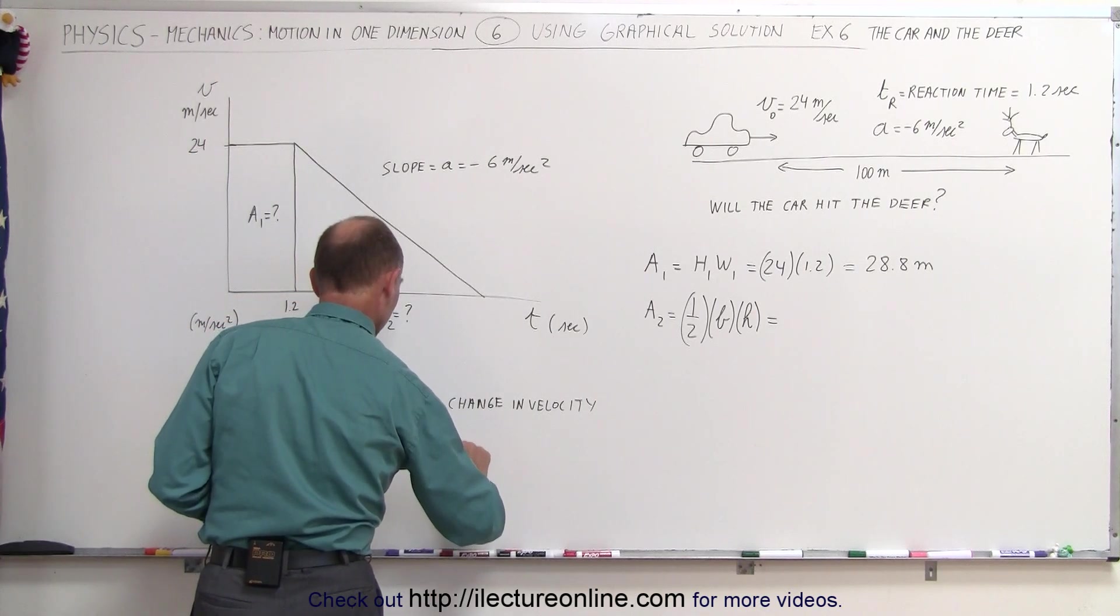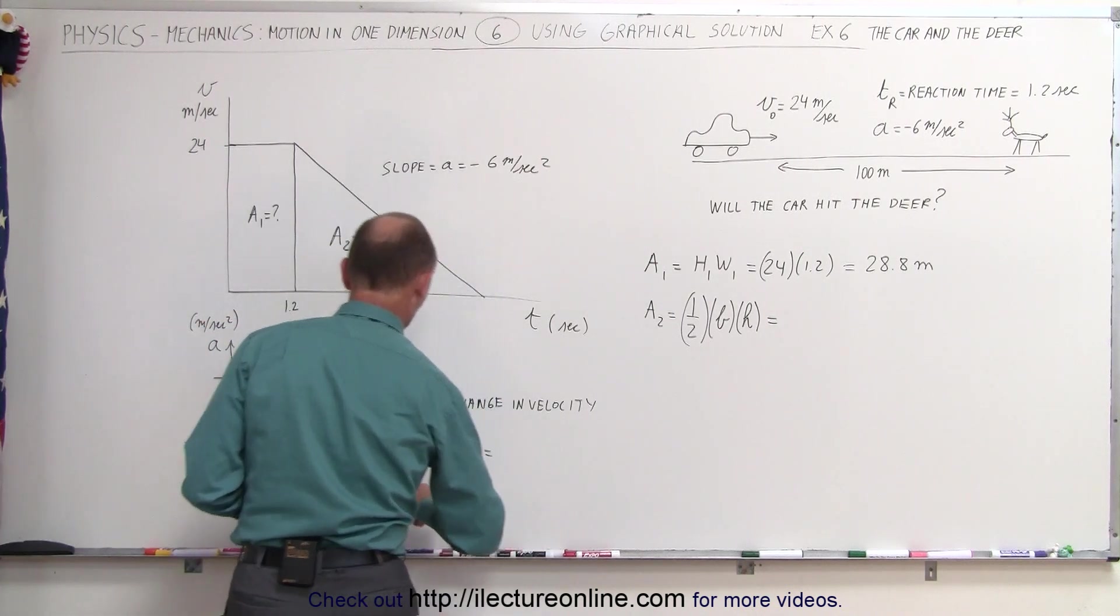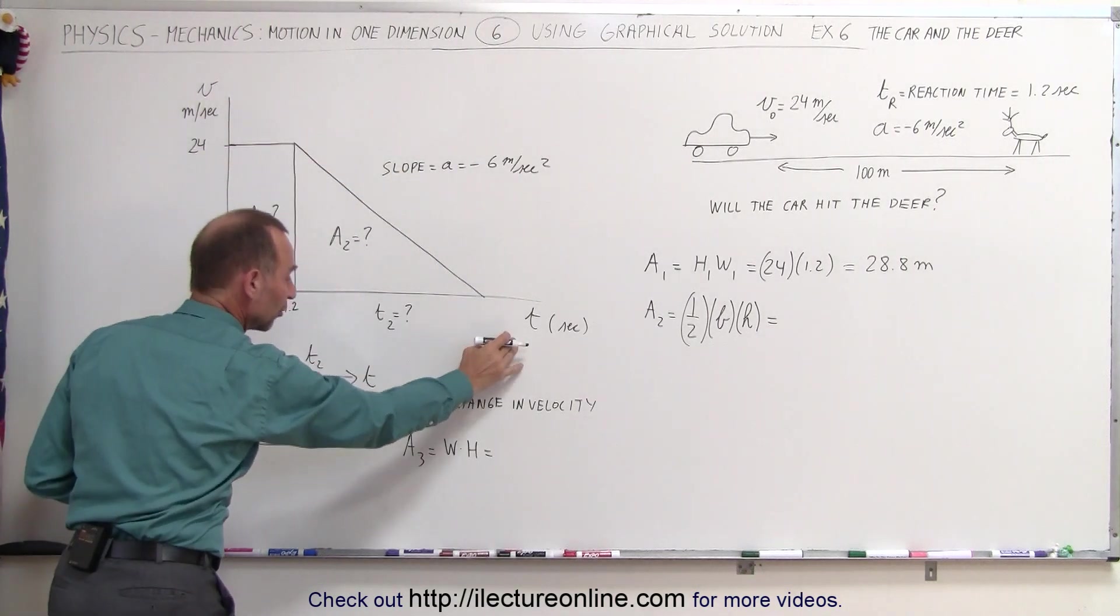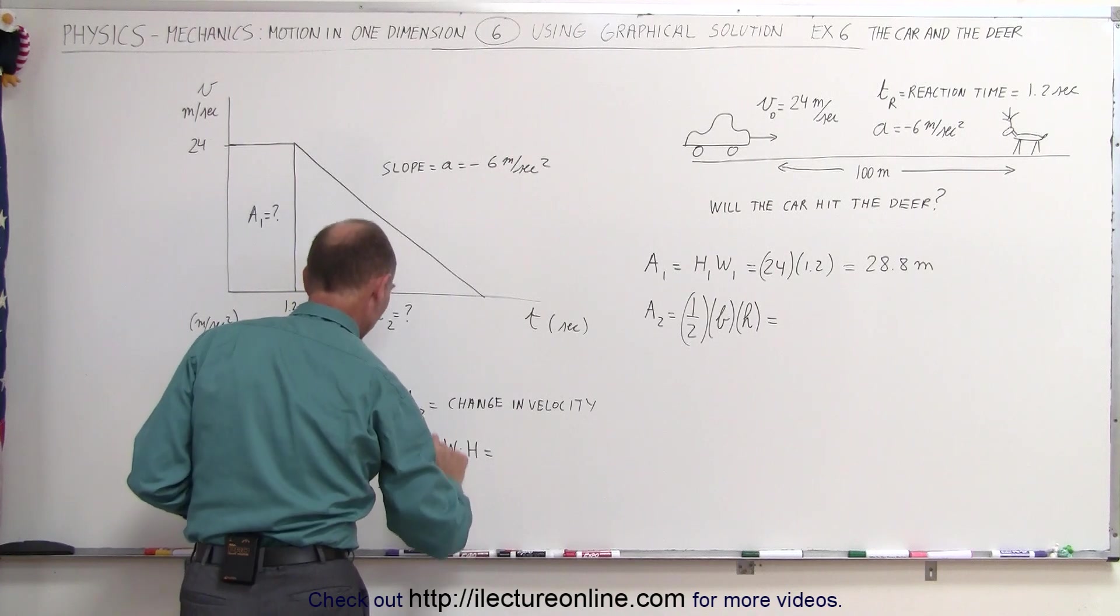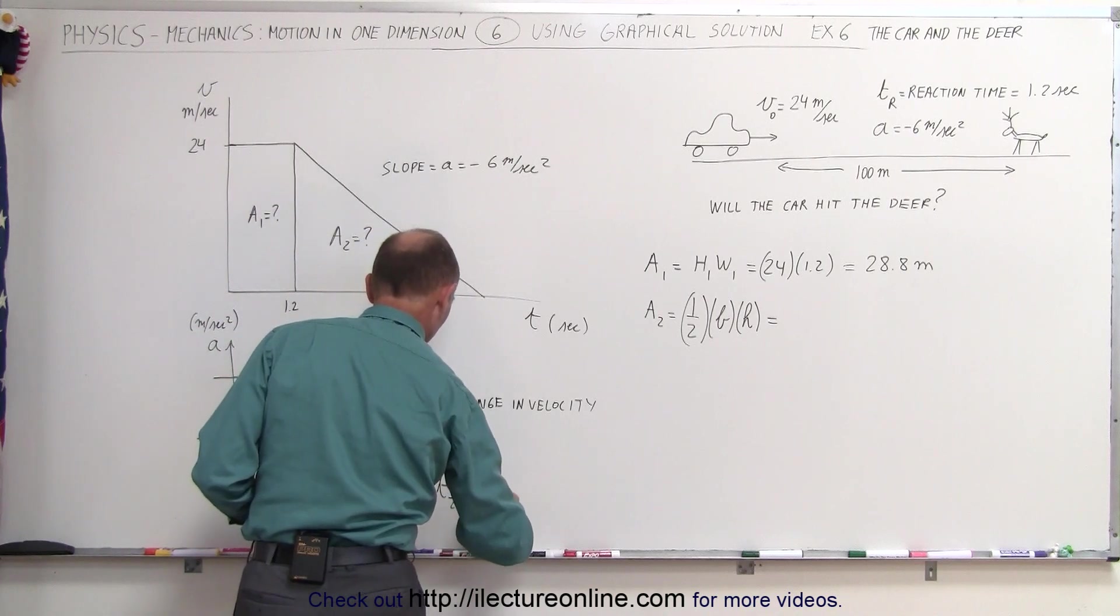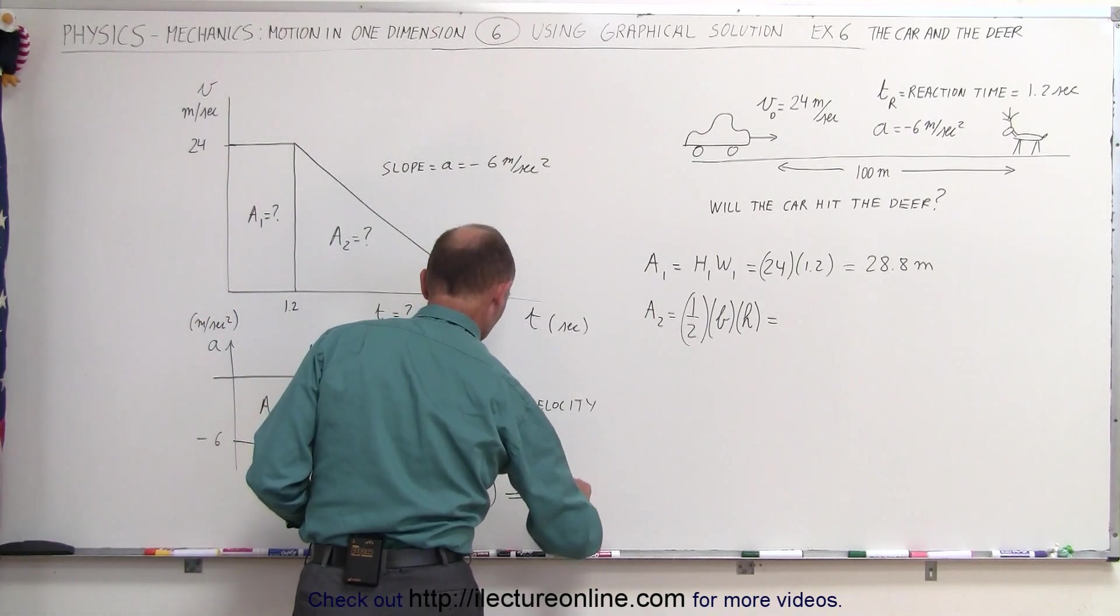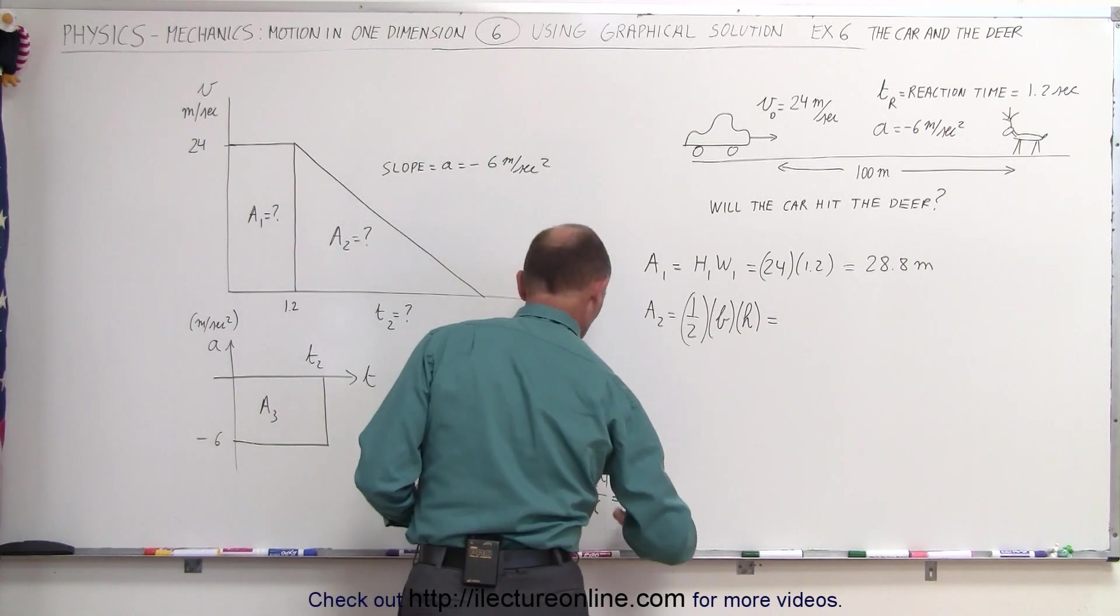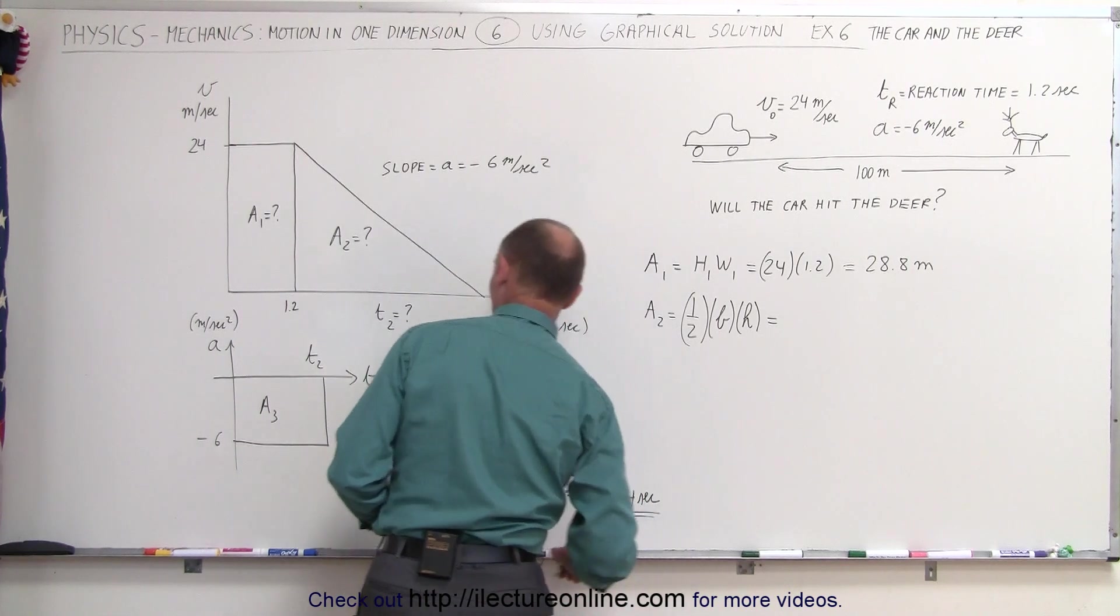a3 is the width times the height. The width is the time we're looking for. We went from 24 meters per second down to 0, so the change in velocity is minus 24, which equals the time t2 times the acceleration minus 6. We can solve for time: t2 equals minus 24 divided by minus 6, which equals 4 seconds.